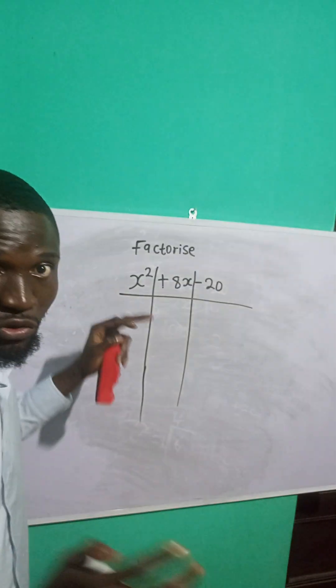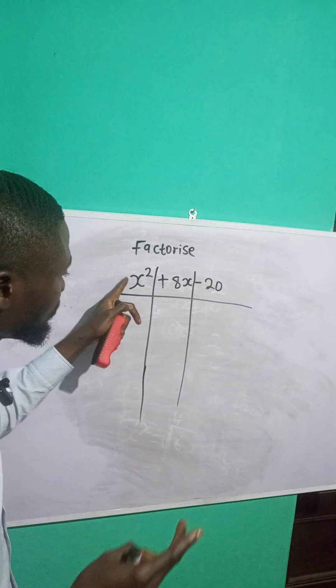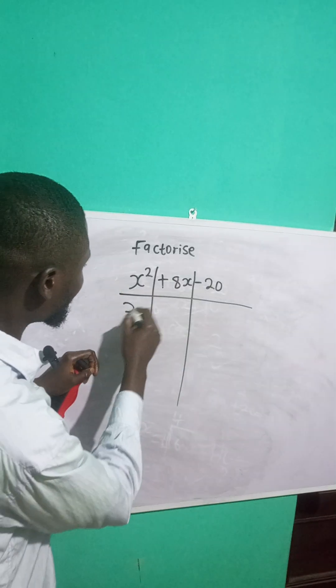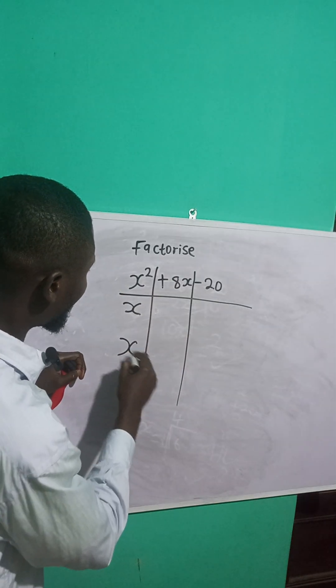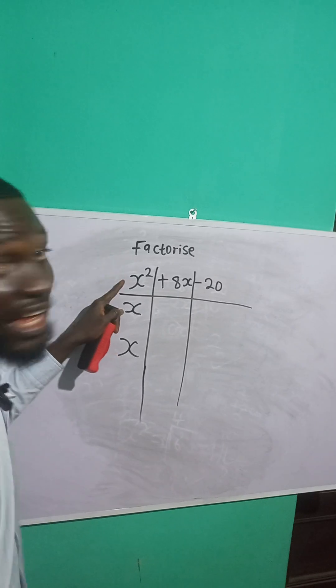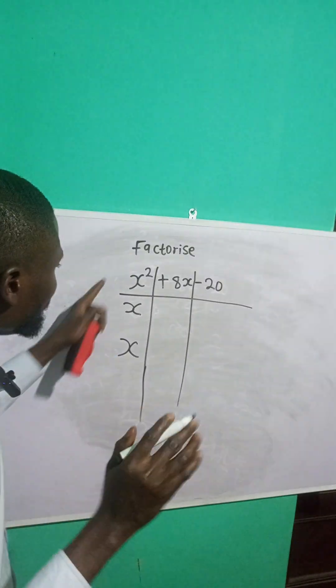Now what are the multiples of x squared? Two terms that I can multiply to get x squared is what? x and what? x. x times x will give me x squared, right? So I'm done with this.